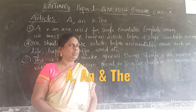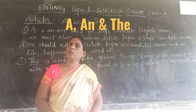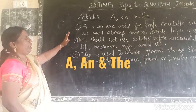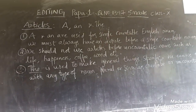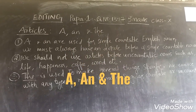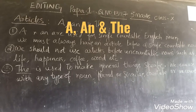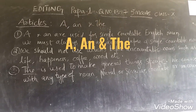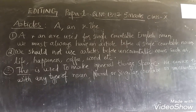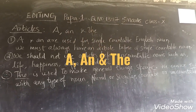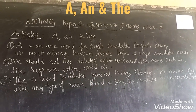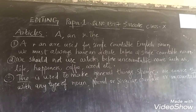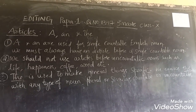Now let's see about articles. Articles are three types: a, an and the. A and an are used for single countable English nouns — we must always have an article before a single countable noun. For example: a book, a pen, a cat, a rat. The words beginning with consonant sounds are prefixed by 'a'. Words beginning with vowel sounds use 'an' — an apple, an egg.